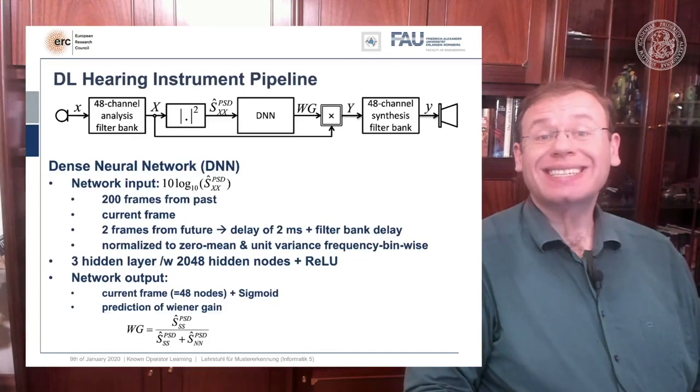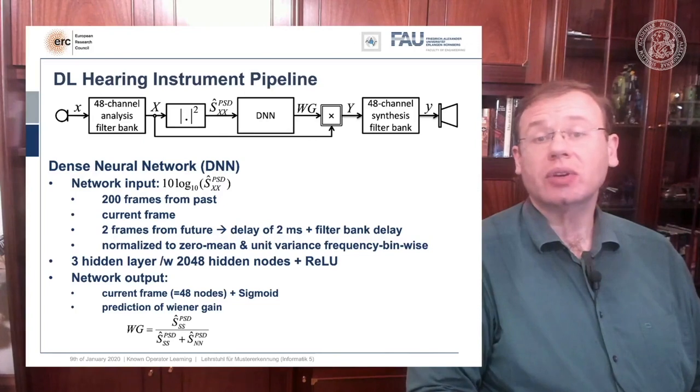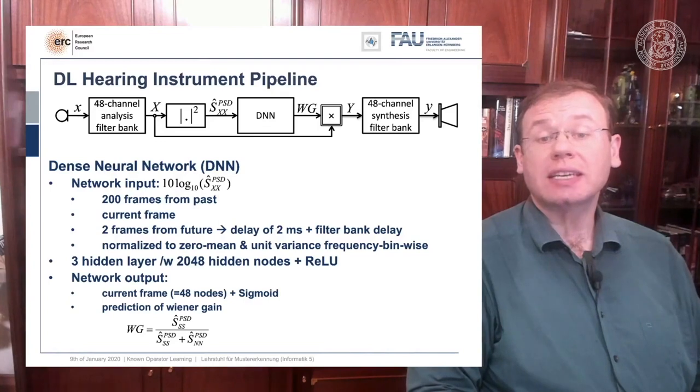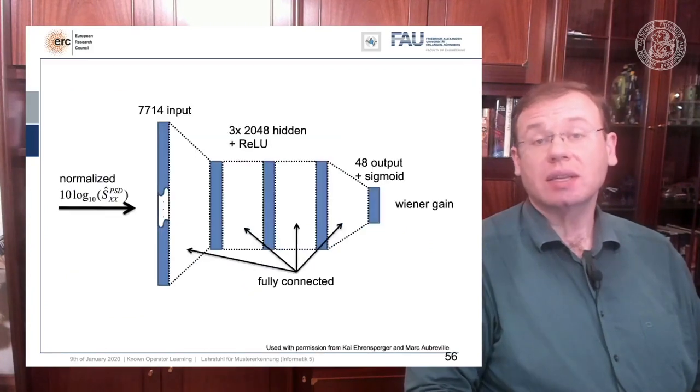So what can we do? Well, we can map this entire hearing aid pipeline onto a deep network, onto a deep recurrent network, and all of those steps can be expressed in terms of differentiable operations. If we do so we get up with the following outline.